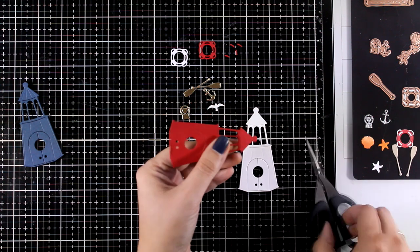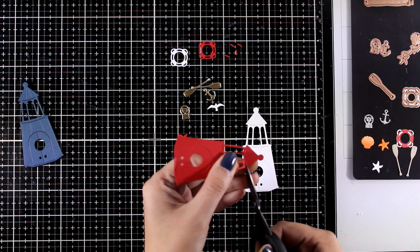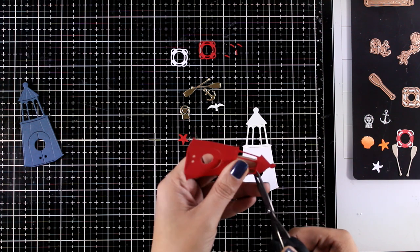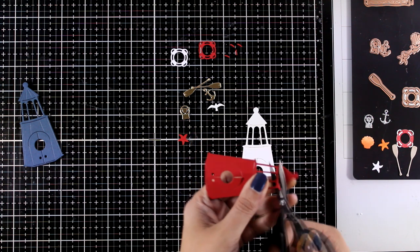The dies are designed in such a way to make it super easy to separate different pieces and here I'm going to use the roof from the red one and the doors from the blue one.